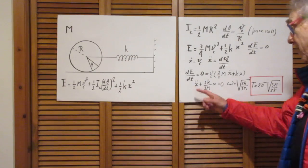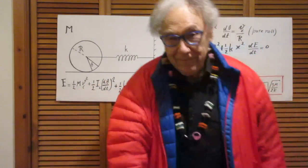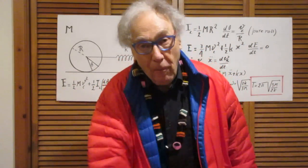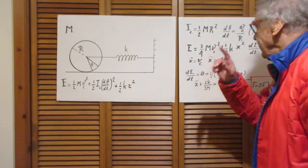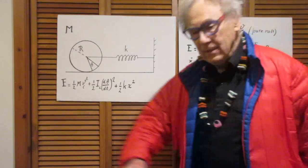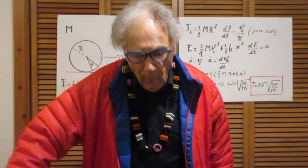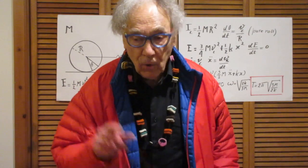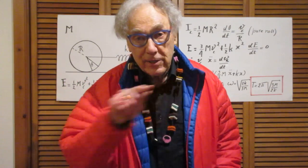Or you may find, if you have swinging motion of a pendulum, you may find that theta double dot plus something times theta is zero. Then you have a simple harmonic motion in terms of angle, not in terms of linear displacement.